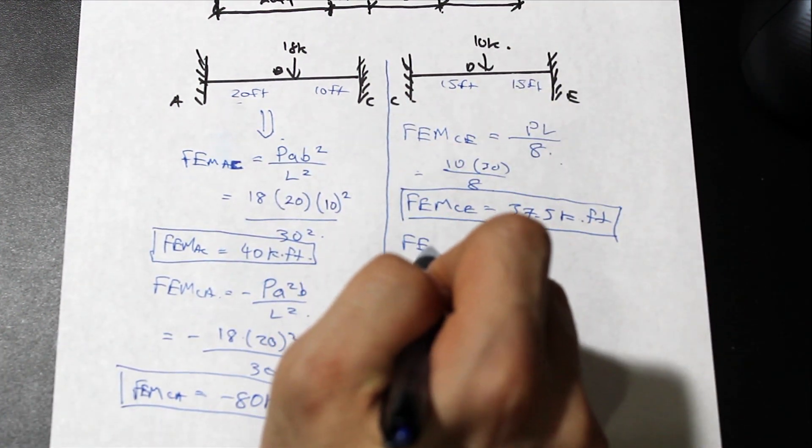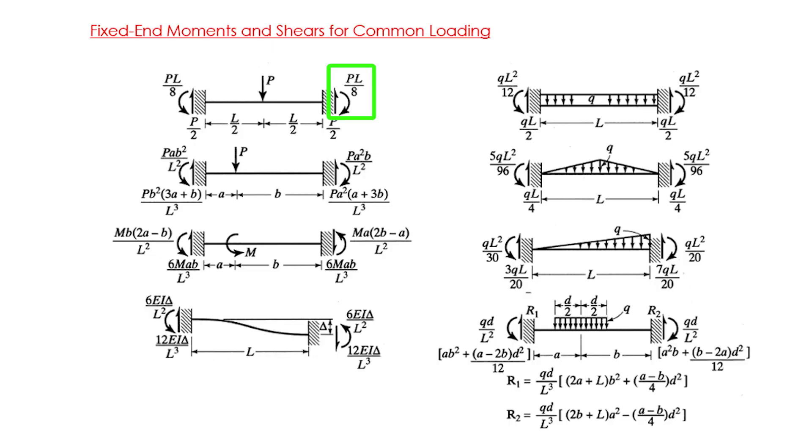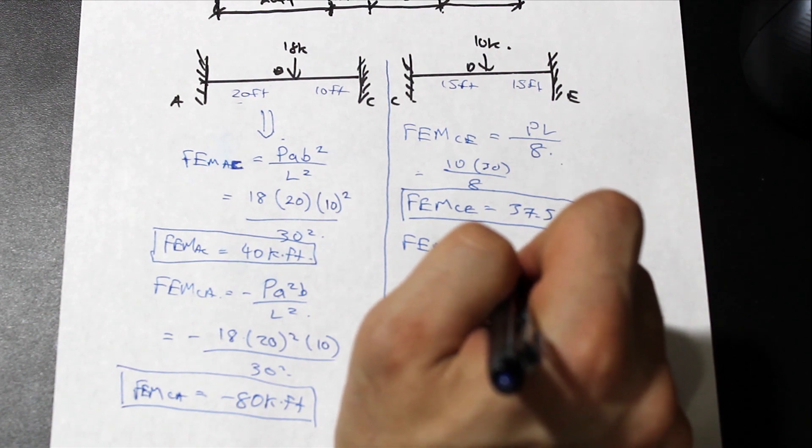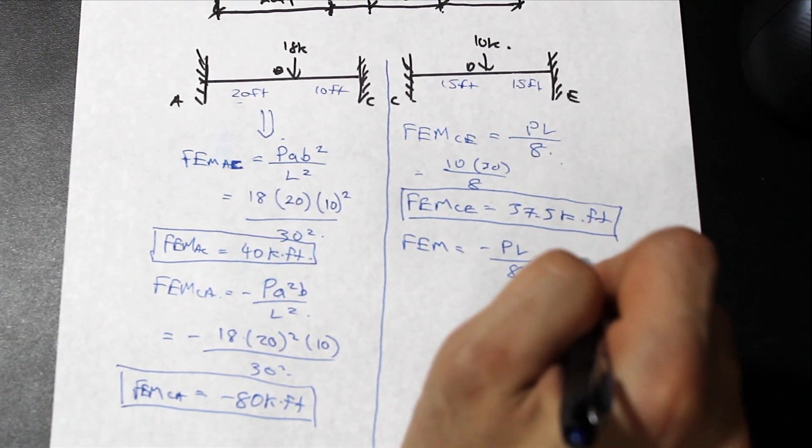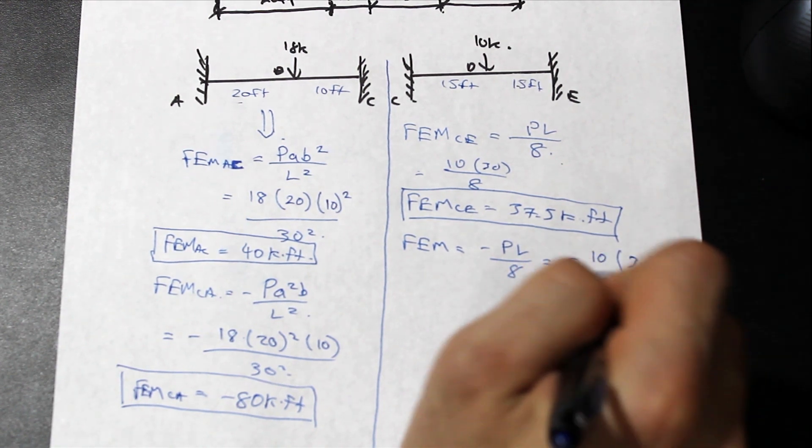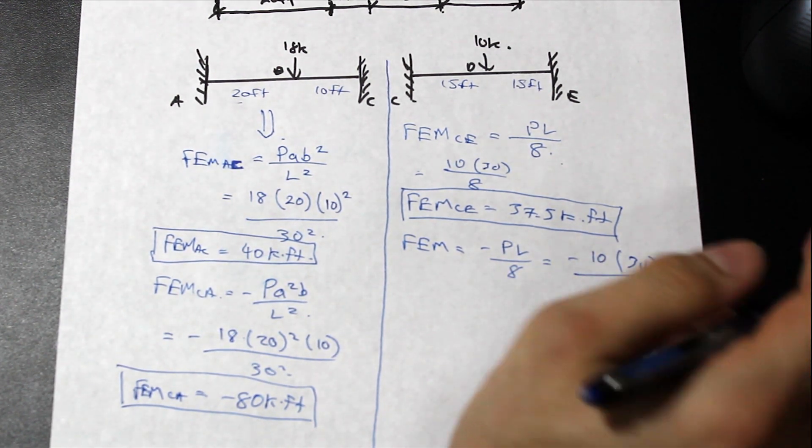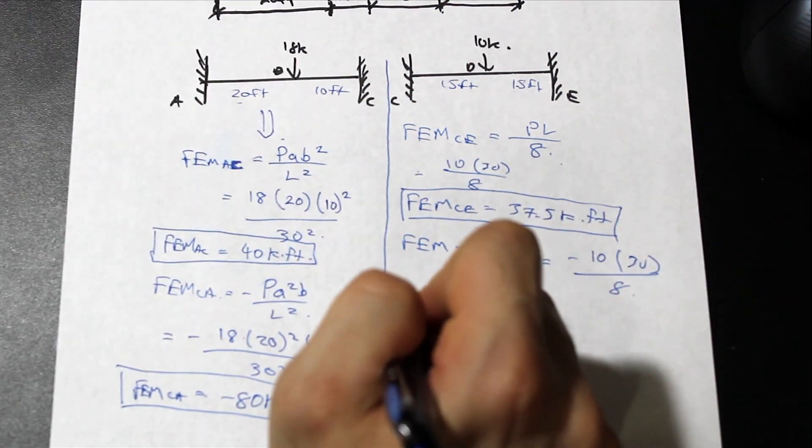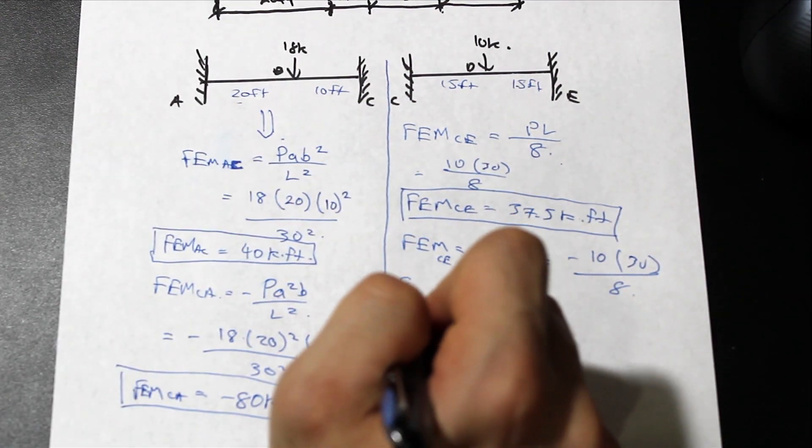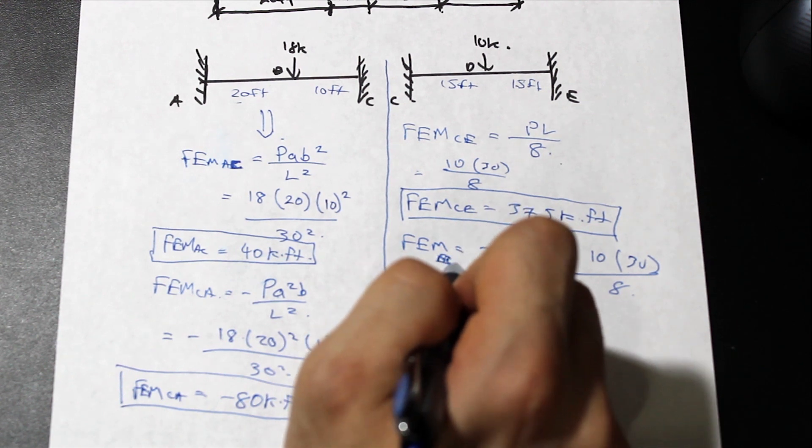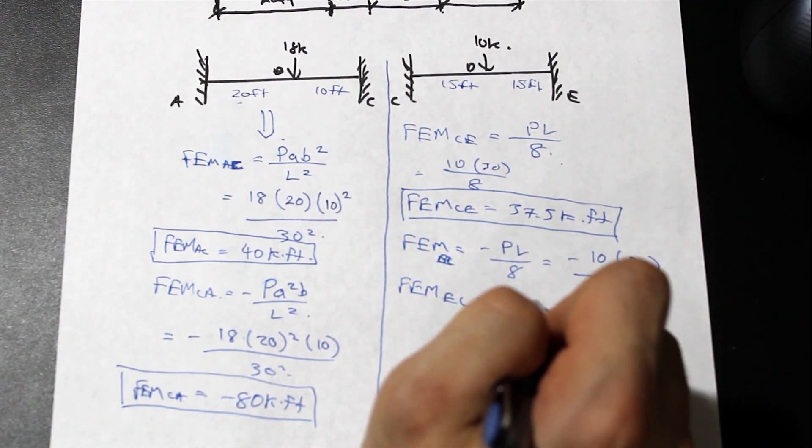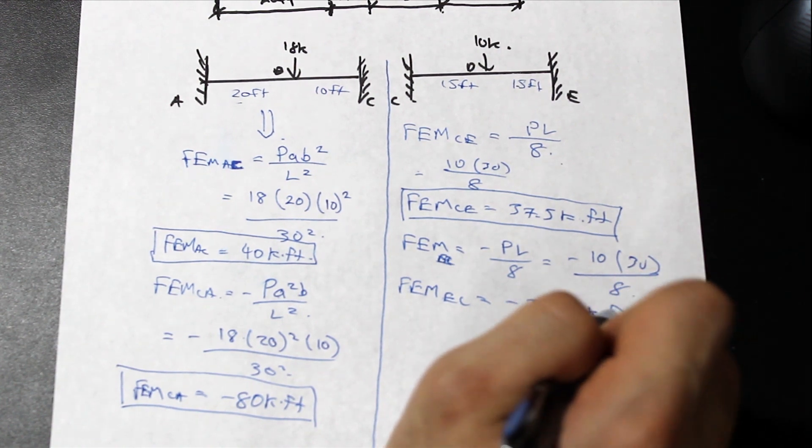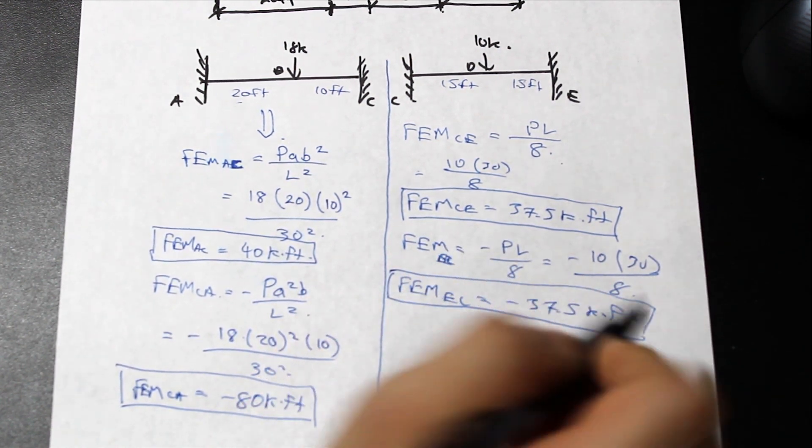Finally, let's find the fixed end moment for the other side. That's going to be negative, right, as our sign convention shows on the screen as well. So we have negative PL over 8, it's the same on both sides. That's going to be equal to negative 10 times 30 over 8. And that is going to be negative 37.5, so EC is equal to negative 37.5 kip feet.